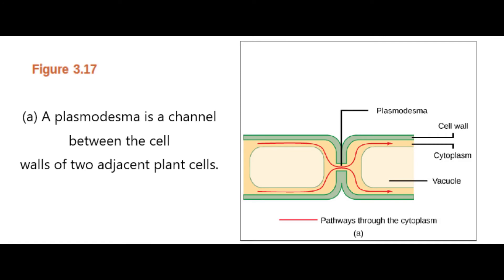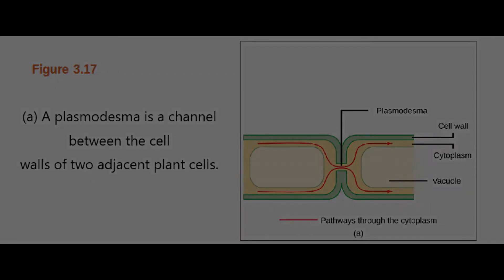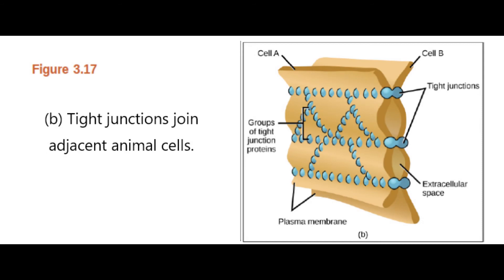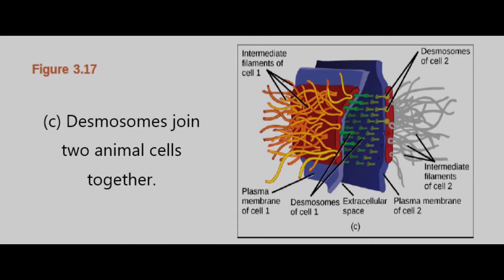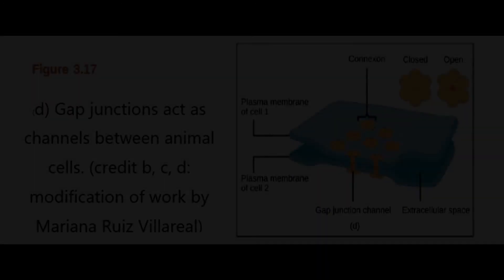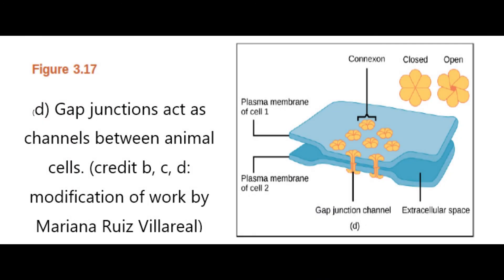Figure 3.17. There are four kinds of connections between cells. A plasmodesmata is a channel between the cell walls of two adjacent plant cells. Tight junctions join adjacent animal cells. Desmosomes join two animal cells together. Gap junctions act as channels between animal cells.